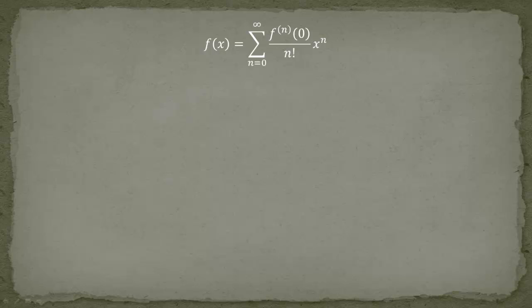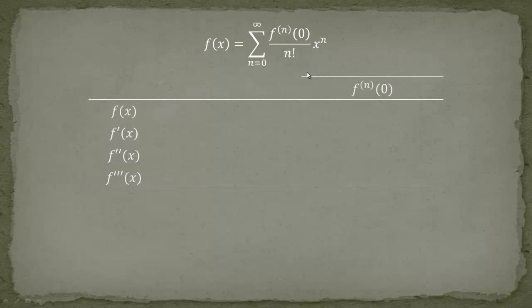We will take the Maclaurin series — we will evaluate our function F at 0, and hence we need all the derivatives at 0. Then we just plug it into the generic formula. Let's have a look at our functions: we have the sine function and the cosine function. I will do them simultaneously because they are pretty much the same.